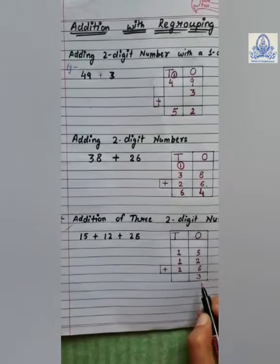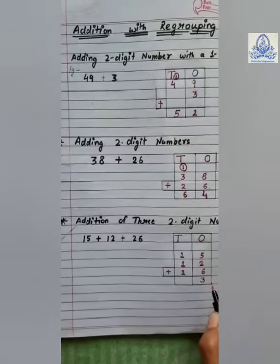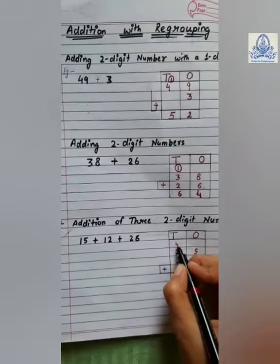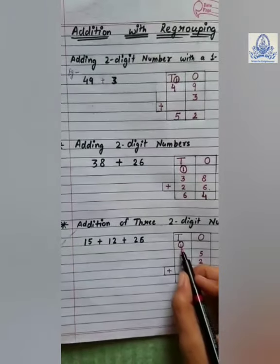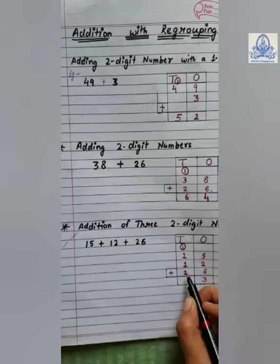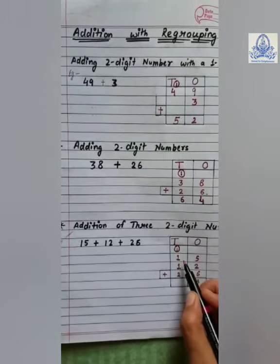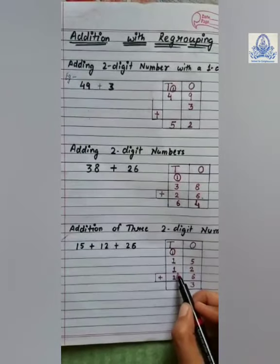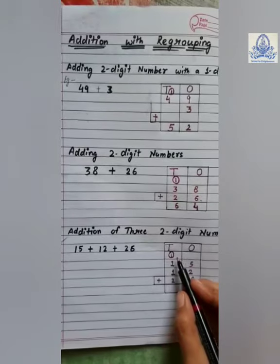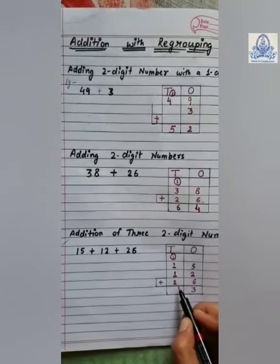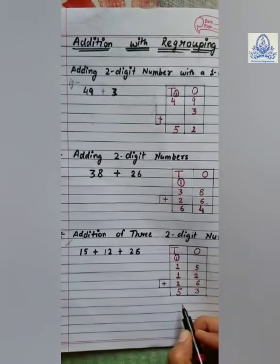So, three will be written at ones place and one is transferred to tens place. Now, this one will be added in the tens digit. That is, one plus one plus one plus two, which totals five. So, the answer is fifty-three.